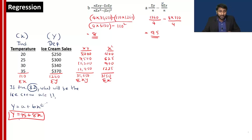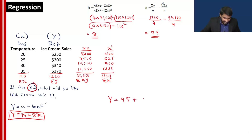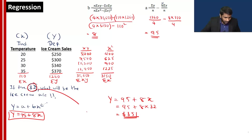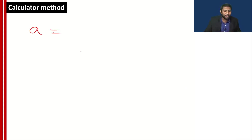So this is our formula: Y = 95 + 8X. For this particular example, our regression formula is Y equals 95 plus 8X. In this question, if the temperature is 32, what will be the ice cream sales? Y = 95 + 8×32 = 95 + 256 = 351. So if the temperature is 32, the ice cream sales will be 351 dollars. You can get all the values — A and B — within a few seconds using the calculator.